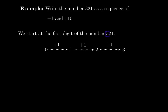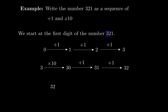Once we get that first digit, we move to the second digit, which is 2. Every time you move to another digit, you multiply by 10. So we take 3 and multiply by 10 to get 30. Then we add 1 once, and again, to get 32. Now we move to the next digit, which is 1. From 32, we multiply by 10 to move to the next position.